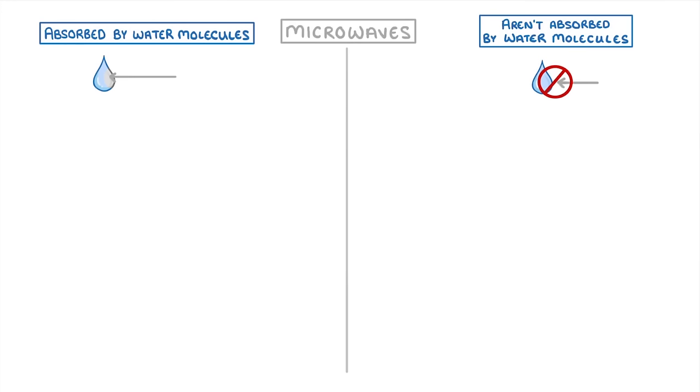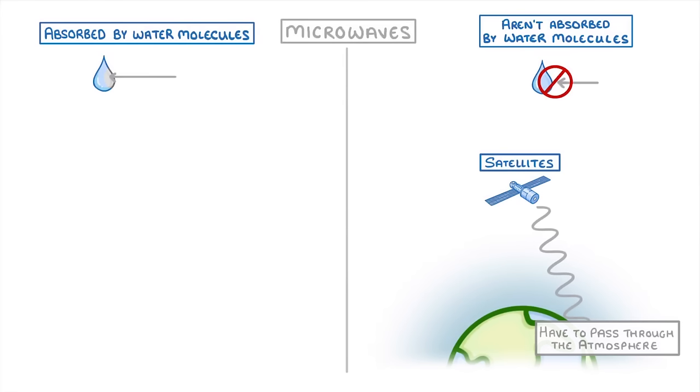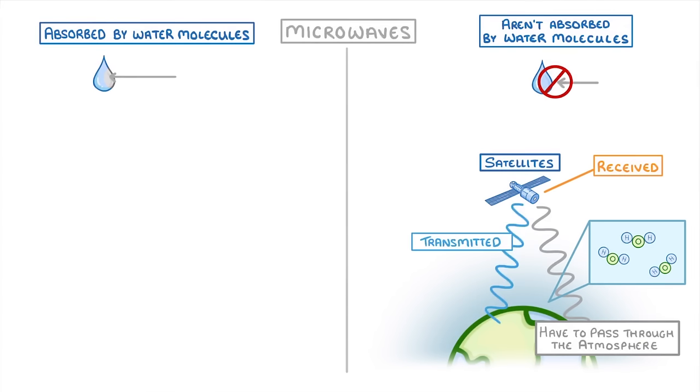The ones that aren't absorbed by water molecules are used for communication using satellites. Because satellites are so far above the Earth, the microwaves have to pass through the Earth's atmosphere, which they wouldn't be able to do if they were absorbed by water molecules, because our atmosphere contains a lot of water. Once the microwaves make it through, they are received by satellites, and then transmitted back down to Earth, where we can detect them using a satellite dish to get things like satellite TV.